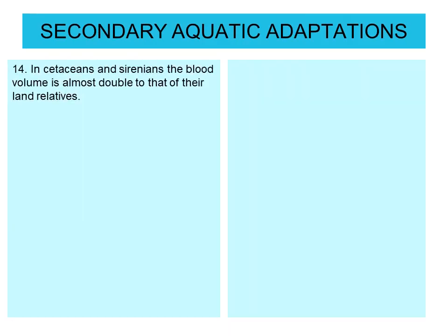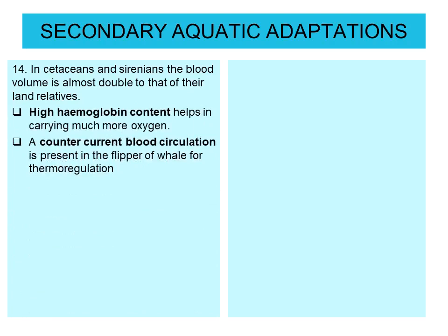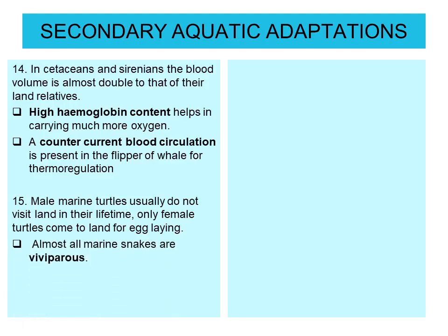In cetaceans and sirenians, the blood volume is almost double that of their land relatives. High hemoglobin content helps in carrying much more oxygen. A countercurrent blood circulation is present in the flippers of whales for thermoregulation. Male marine turtles usually do not visit land in their lifetime; only female turtles come to land for egg laying. Almost all marine snakes are viviparous.